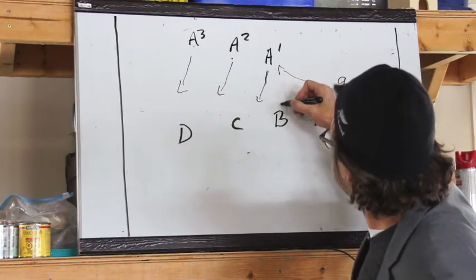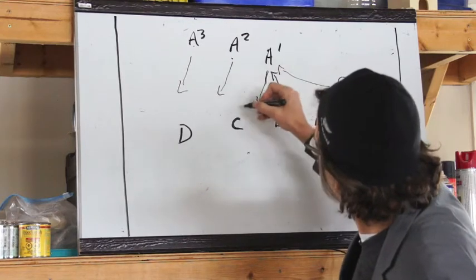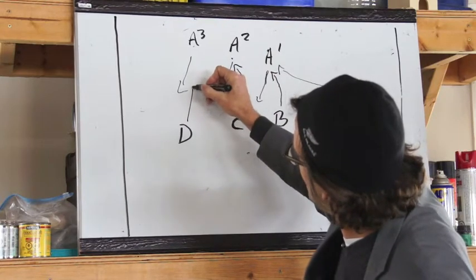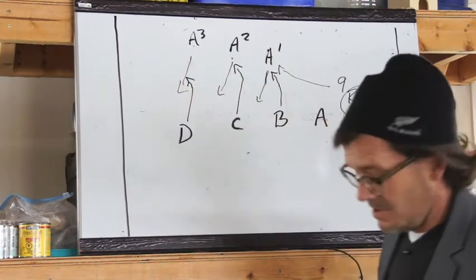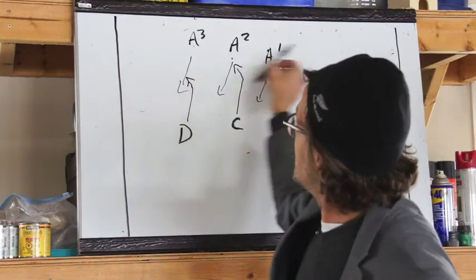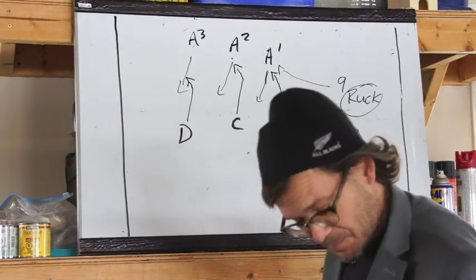So we'll have our D defender. He just comes up hard and pushes to the inside. C comes up, pushes to the inside. D comes up, pushes to the inside. What this has the effect of doing is keep moving these attackers out of bounds or running them out of space.